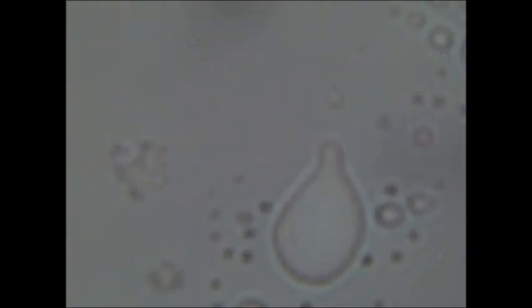I believe what you're looking at is the chemical version of cell division. As the fatty acid vesicle incorporates more material from the environment, it grows and becomes less spherical and more of an amorphous blob. Eventually, as you can see, part of it pinches off and forms a new vesicle.